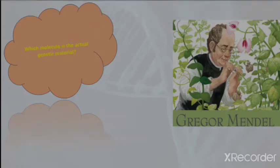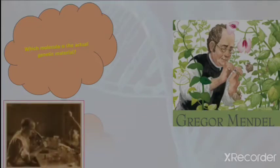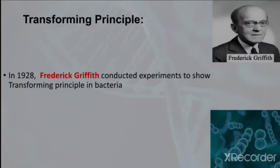In order to solve this question, scientists started experimenting. We will be studying a total of four experiments in this chapter. Today we will study the first experiment of molecular biology — the transforming principle — which was performed by Sir Frederick Griffith. Griffith performed this experiment on mice using Streptococcus pneumoniae bacteria.